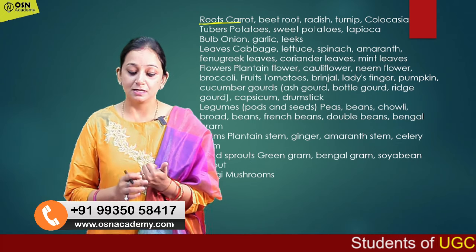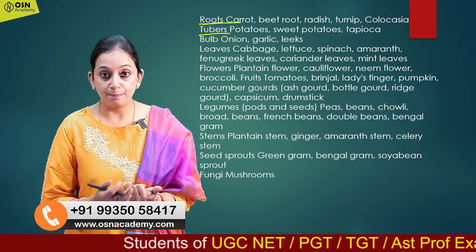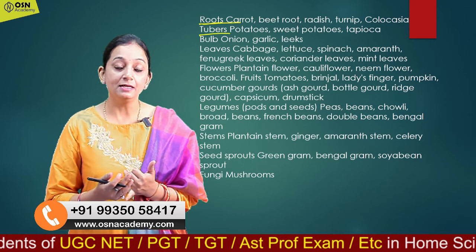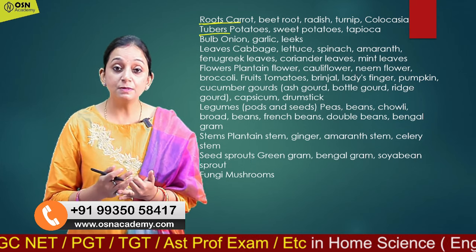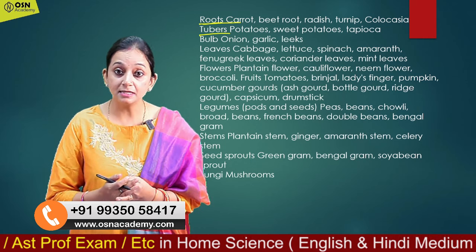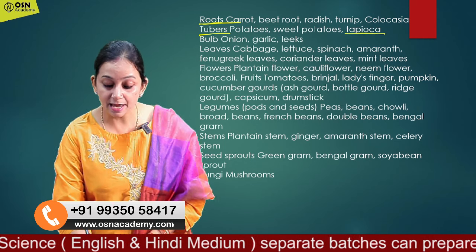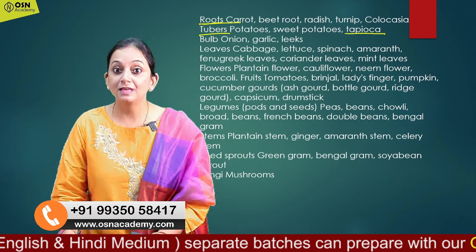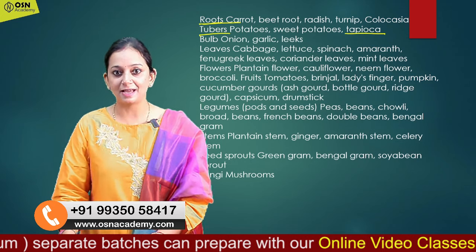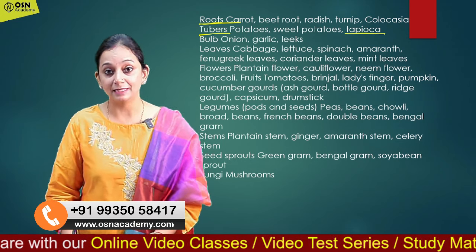Next, tubers. Tubers include potato — called aloo — sweet potato, and tapioca. Tapioca is called sabudana. Remember, tapioca is called sabudana.